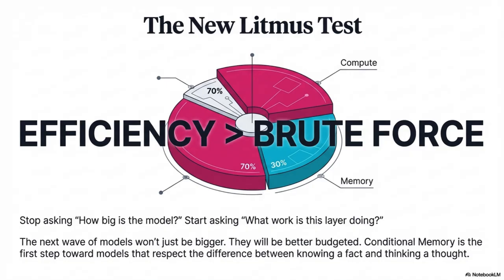If you're evaluating a large model in the next year, this paper gives you a totally new litmus test. Stop asking only how many parameters it has and start asking what work is it doing per layer. Conditional memory helps ensure that early layers aren't wasting time on trivial lookups — the answer should be high-value reasoning. Understanding this primitive really does change how you should think about speed, efficiency, and scale.